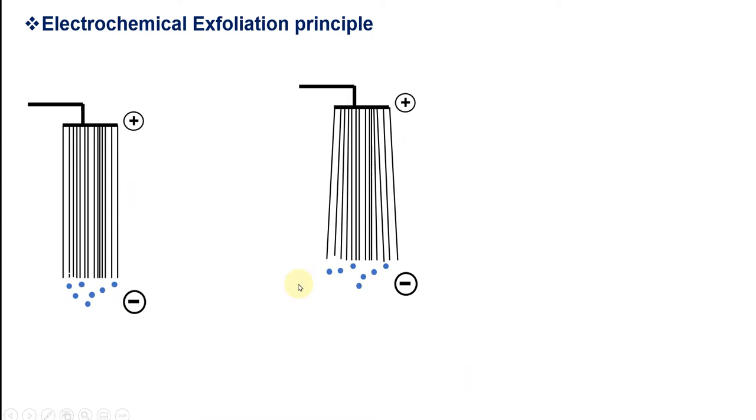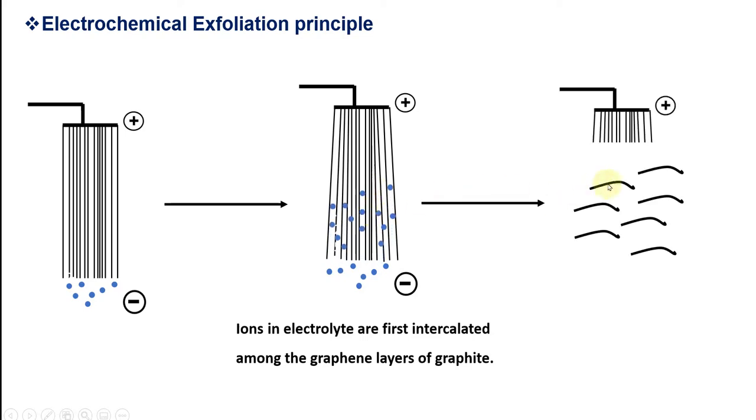What is the principle of electrochemical exfoliation? After you set up the electrochemical cell, the ions in the electrolyte intercalate among the graphene layers of graphite and finally you can get few layers of graphene.